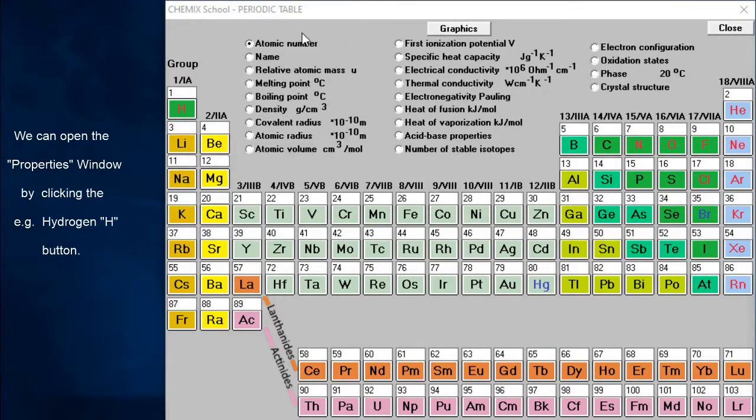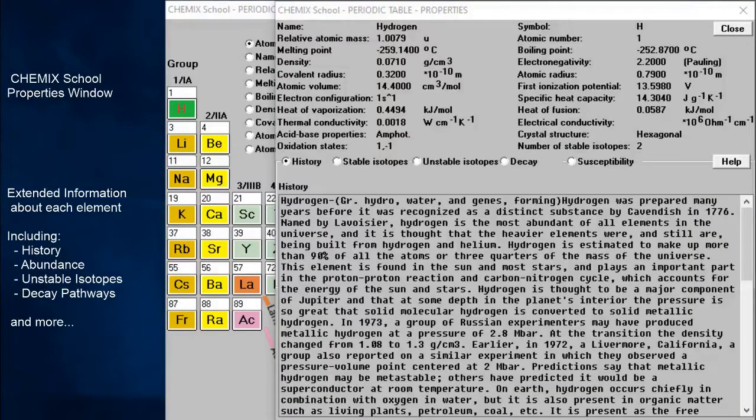To get extended information about each element, we have to open the properties window by clicking, for example, the hydrogen button. In the properties window we can view all information of each element simultaneously, activated by a push button for each element.